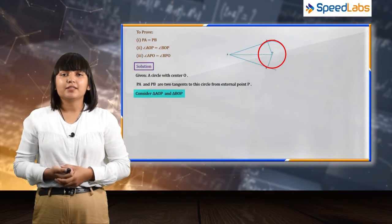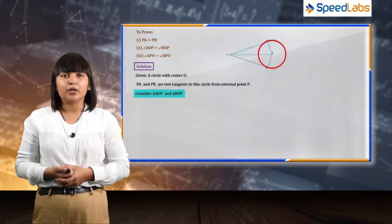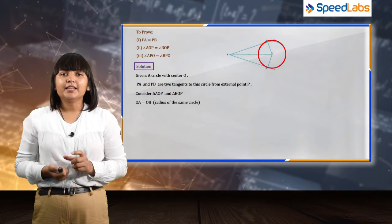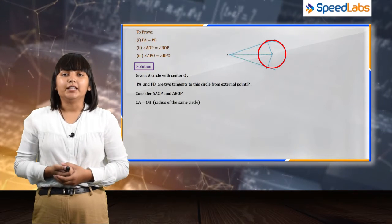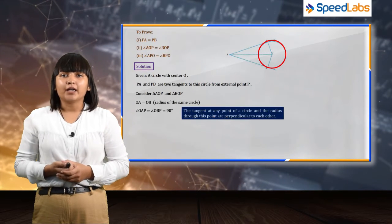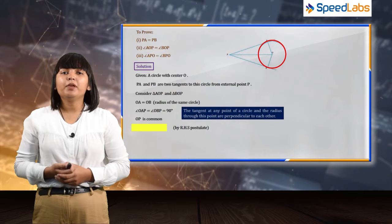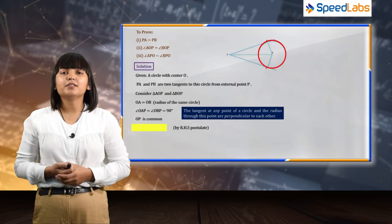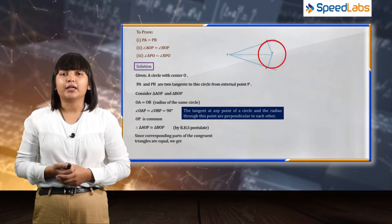The angle between the radius and the tangent from point P is 90 degrees. So, the angle OAP and OBP are equal in the two triangles and there is a side OP which is common to both the triangles.